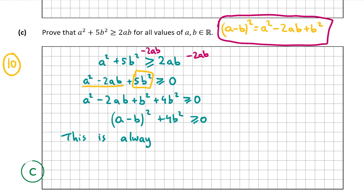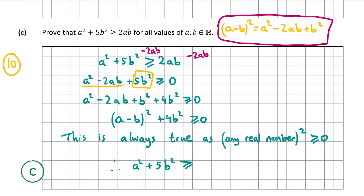Therefore this is always true as any real number squared is greater than or equal to 0. Therefore a² + 5b² ≥ 2ab. That's our answer for part c, the final part of the question. Thank you very much for watching and I hope I helped.